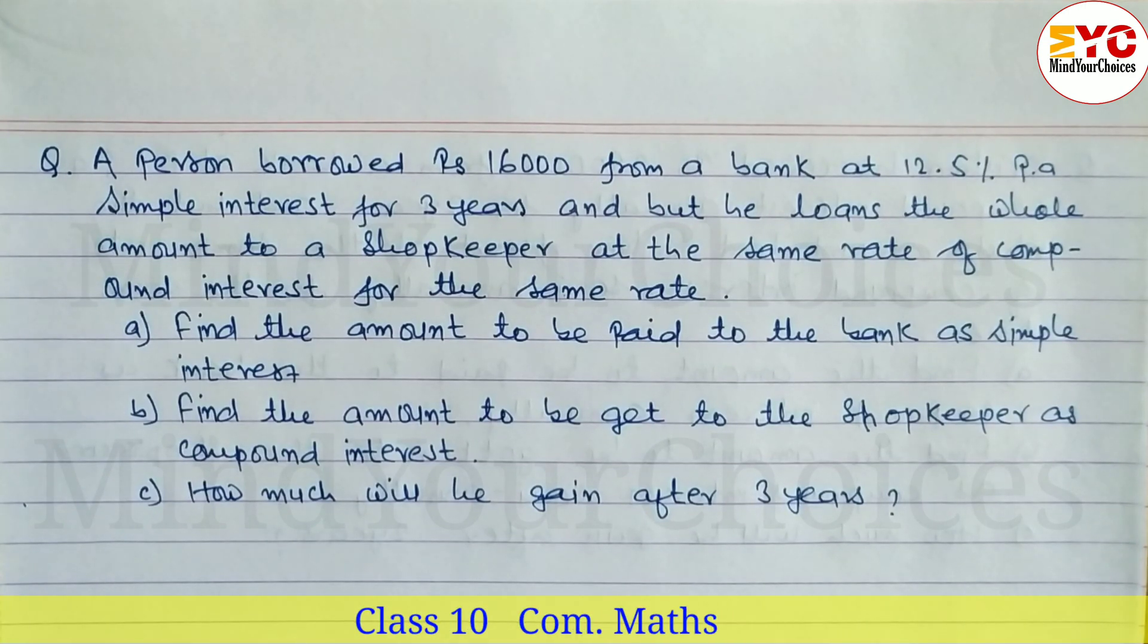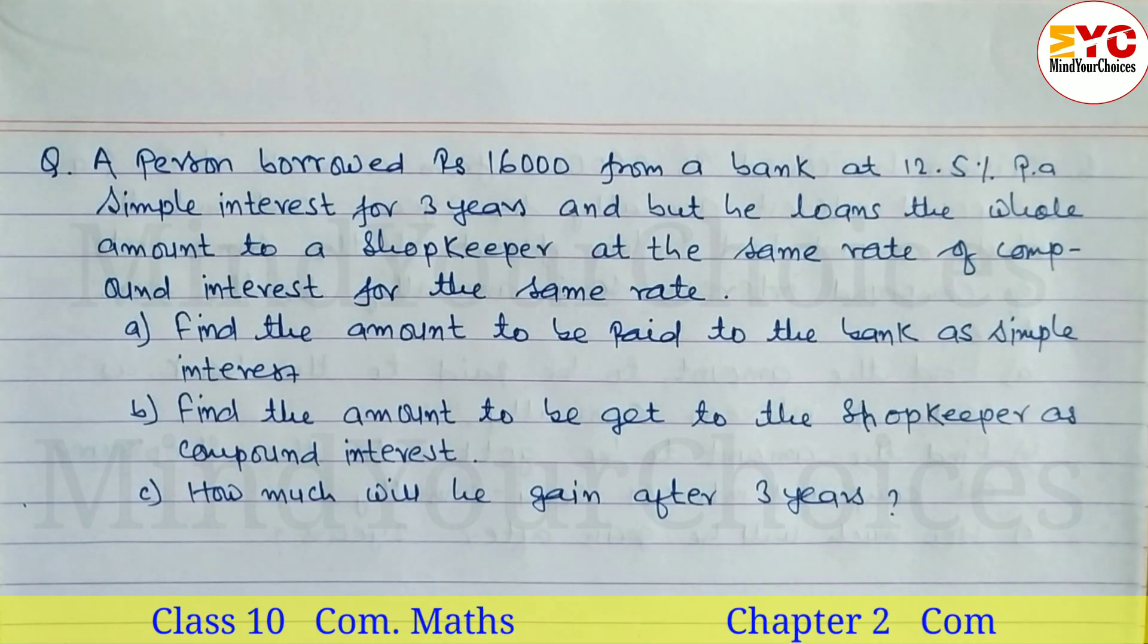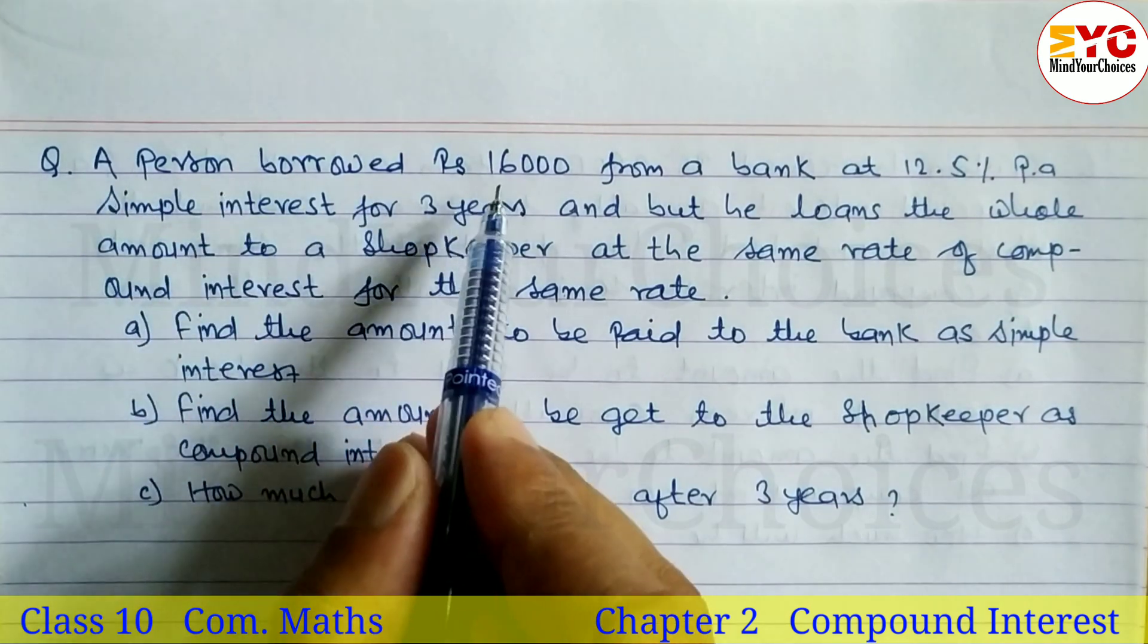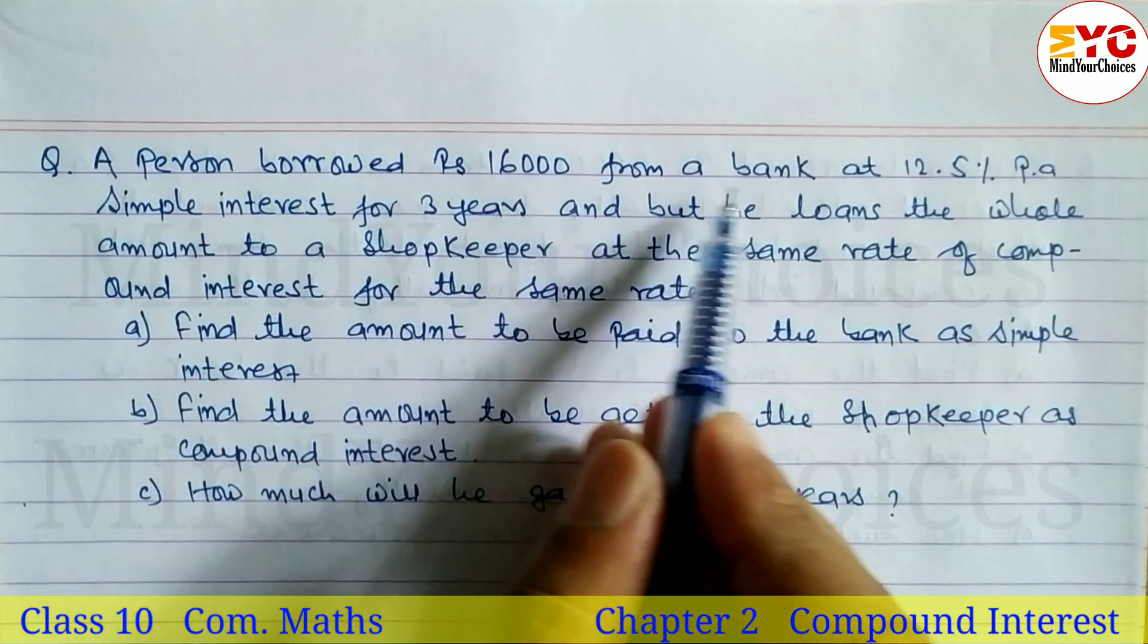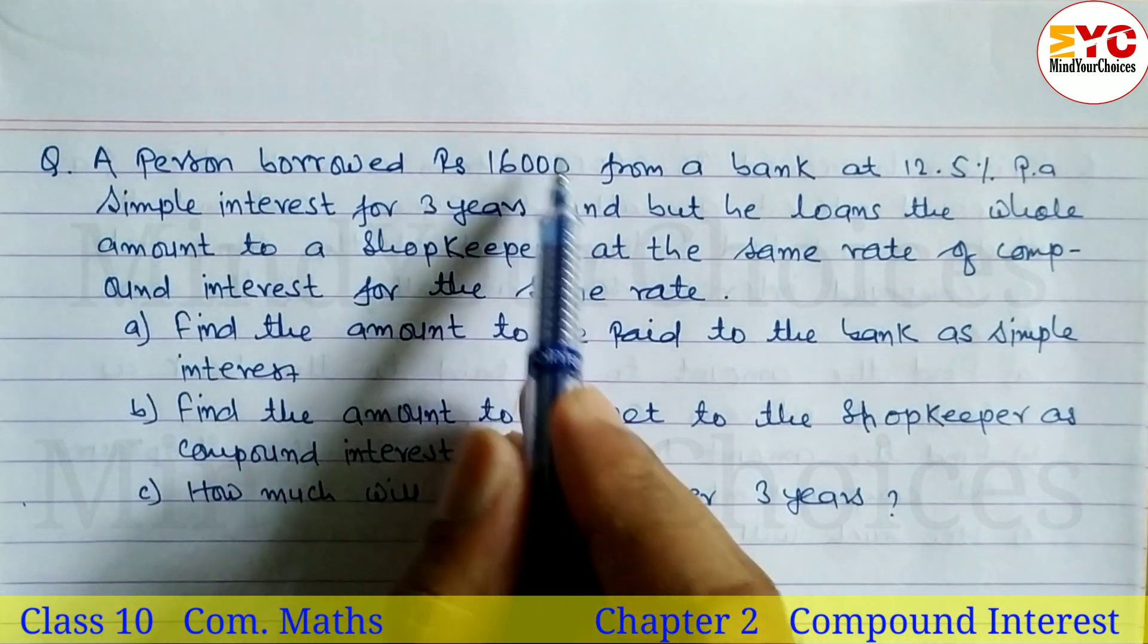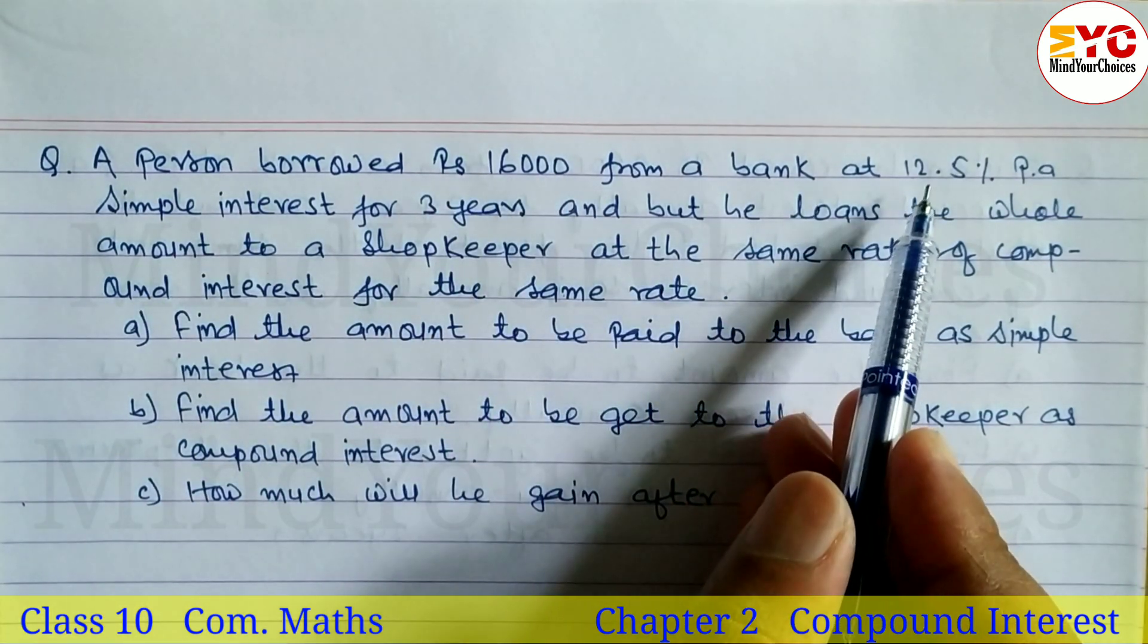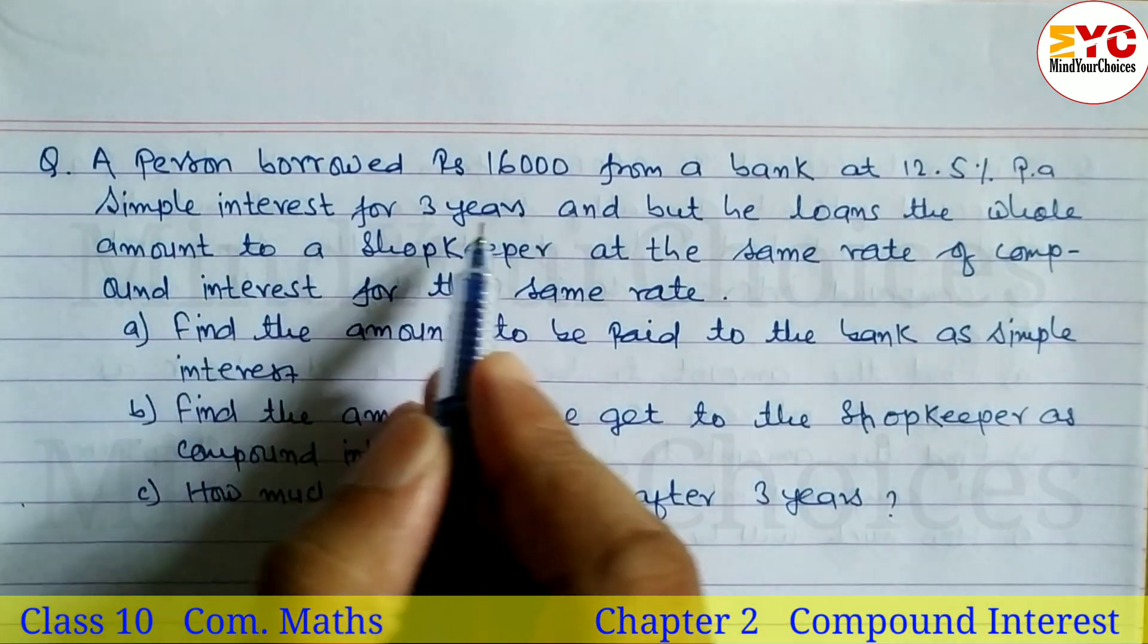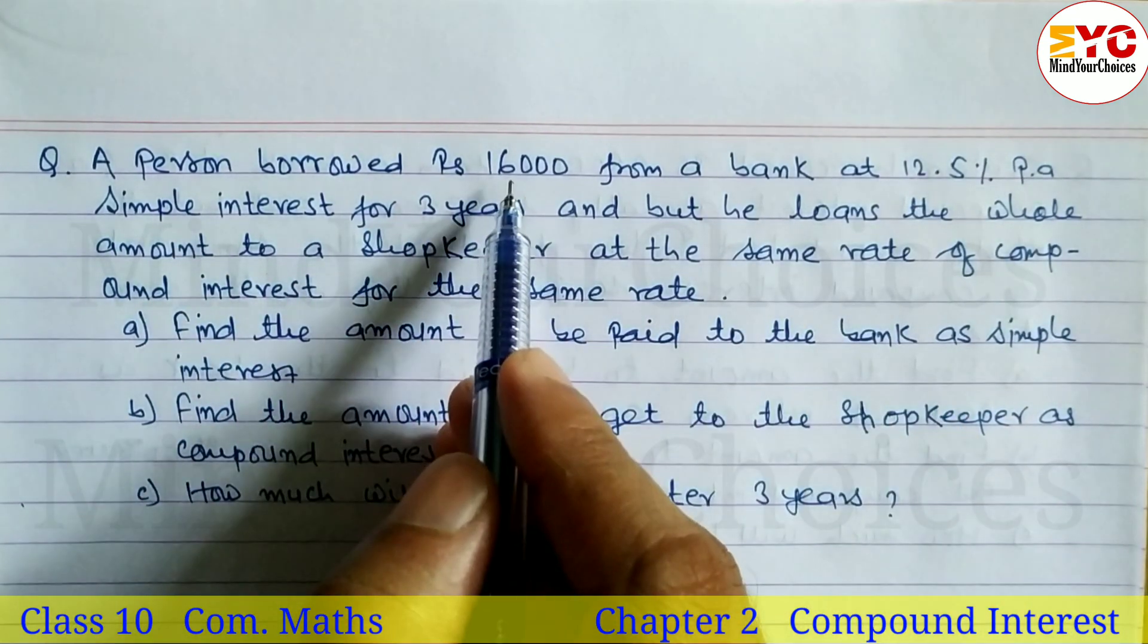This is question number 2 on compound interest. A person borrowed Rs. 16,000 from a bank at 12.5% simple interest for 3 years.